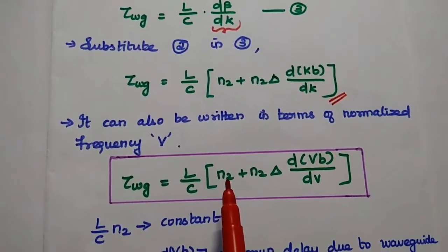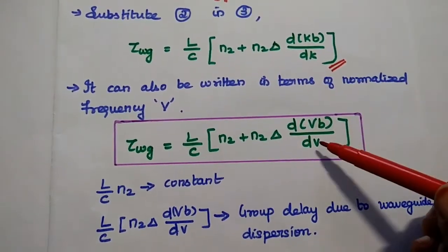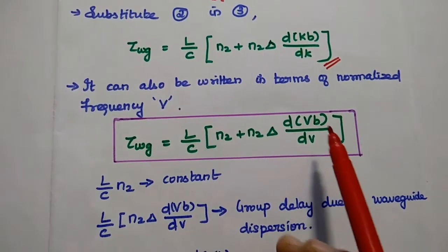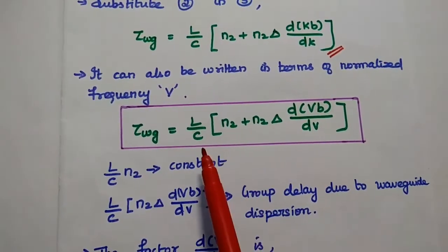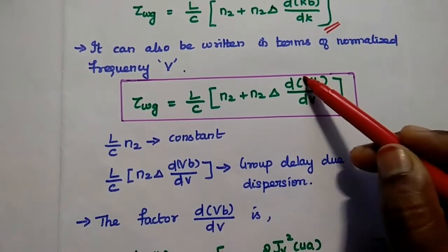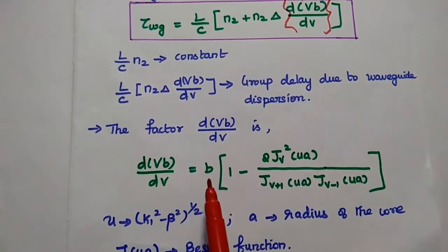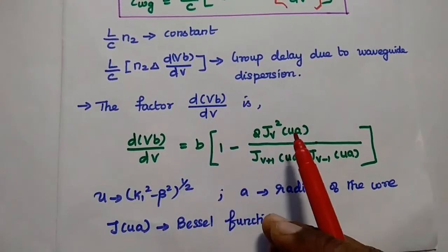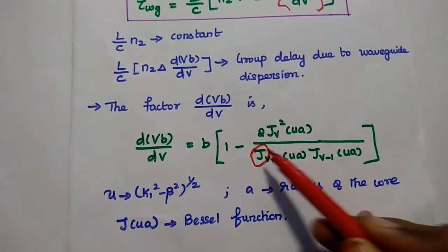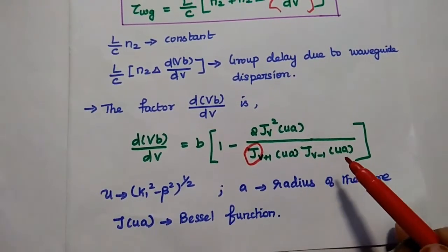The group delay can also be written in terms of the normalized frequency v. Replacing k (the free space propagation constant) with v, this becomes: τ_wg = (L/c)·[n2 + n2·Δ·d(vb)/dv]. The first term represents a constant value; the second term represents the group delay due to waveguide dispersion. The factor d(vb)/dv is very important and equals b·[1 − 2·J_v²(ua) / (J_{v+1}(ua)·J_{v−1}(ua))], where J denotes the Bessel function, a is the radius of the core, and u = (k1² − β²)^(1/2).